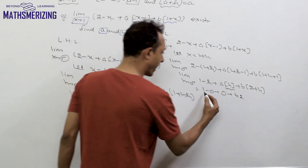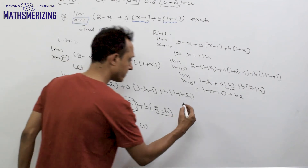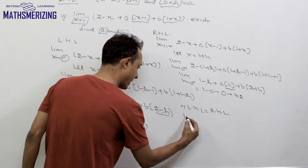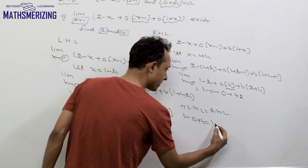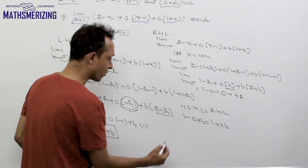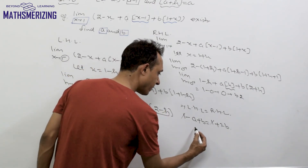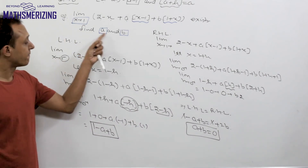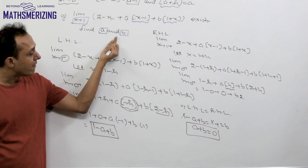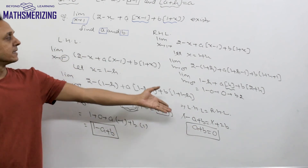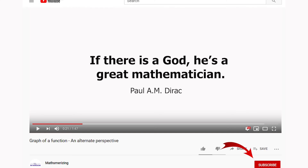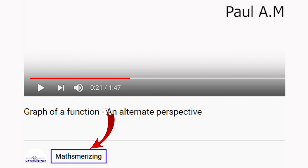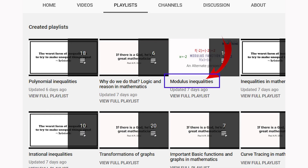Since the limit exists, the left-hand limit must equal the right-hand limit: 1 - a + b = 1 + 2b. Cancelling 1 from both sides gives -a + b = 2b, so a + b = 0. Therefore, a and b can take any real values provided a + b = 0. If you like the video, consider subscribing and sharing it. The best way to navigate any topic is through a playlist — go to the channel page, click Playlist, and select the topic you wish to study.